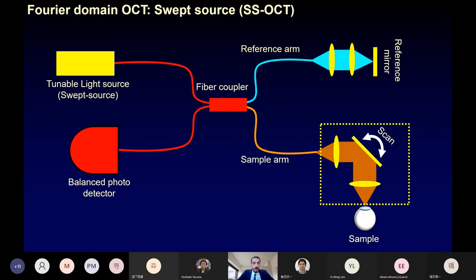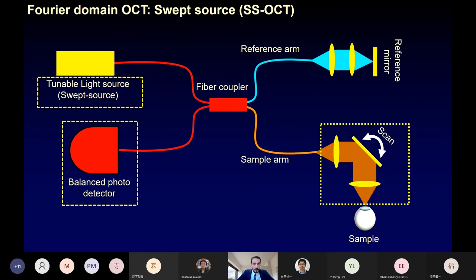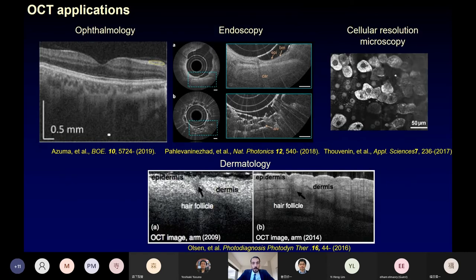The second variation of Fourier domain OCT is swept source OCT. The interference scheme and scanning is similar to spectral domain OCT, but the light source is tunable, where the wavelength sweeps along time, and signal detection is done using a photodetector. OCT has been widely used for clinical applications such as ophthalmology, endoscopy, solar resolution microscopy, and dermatology.